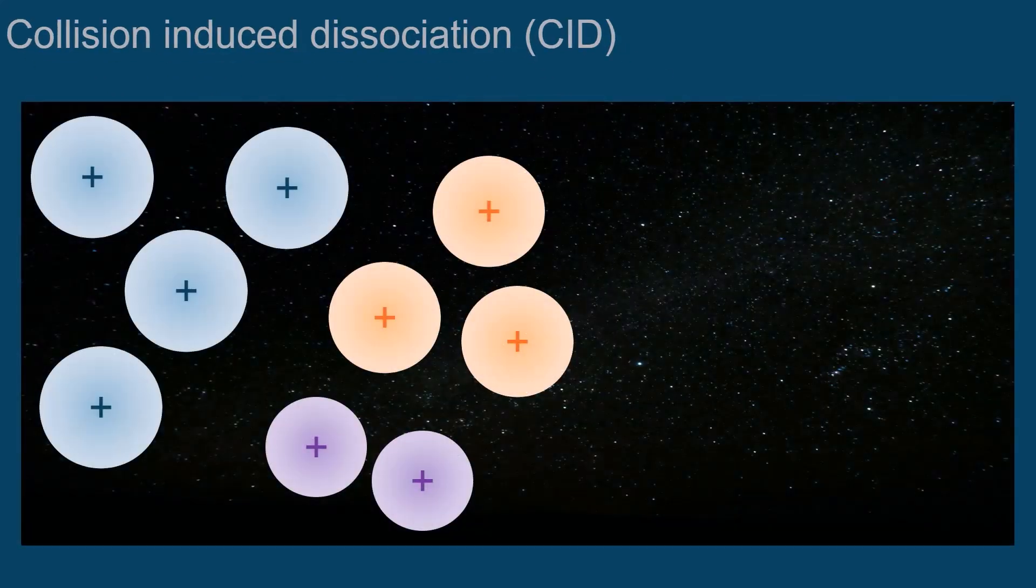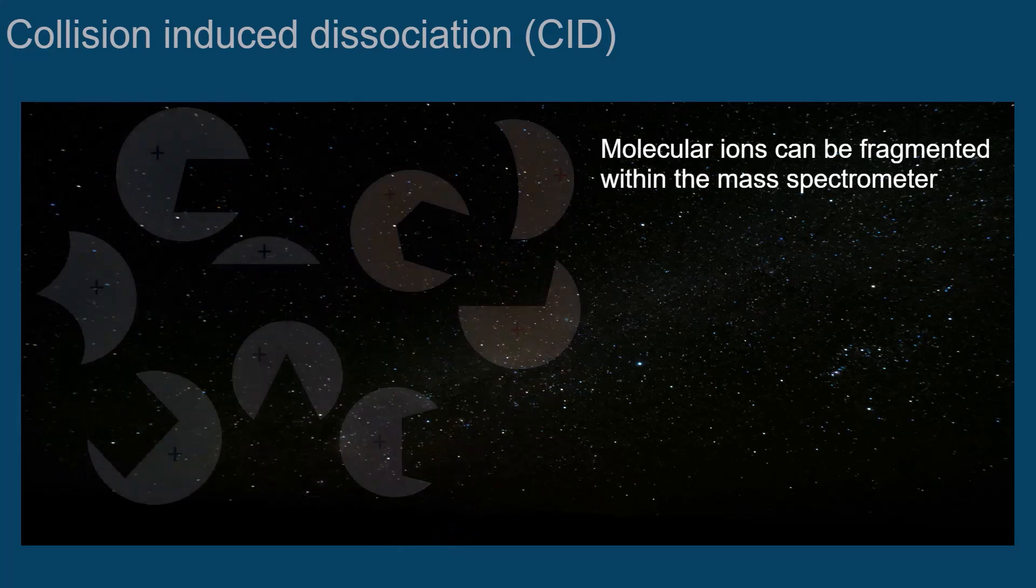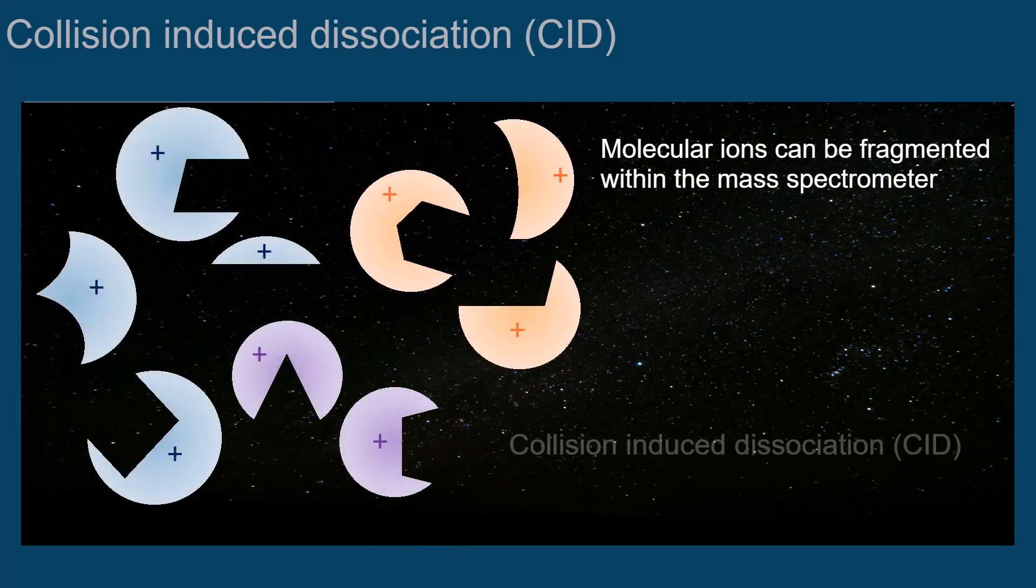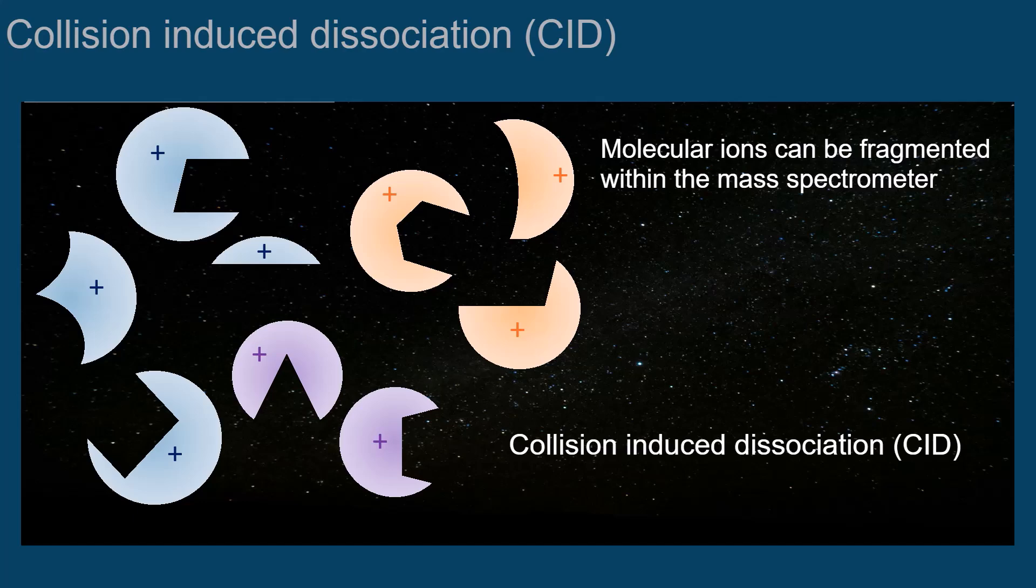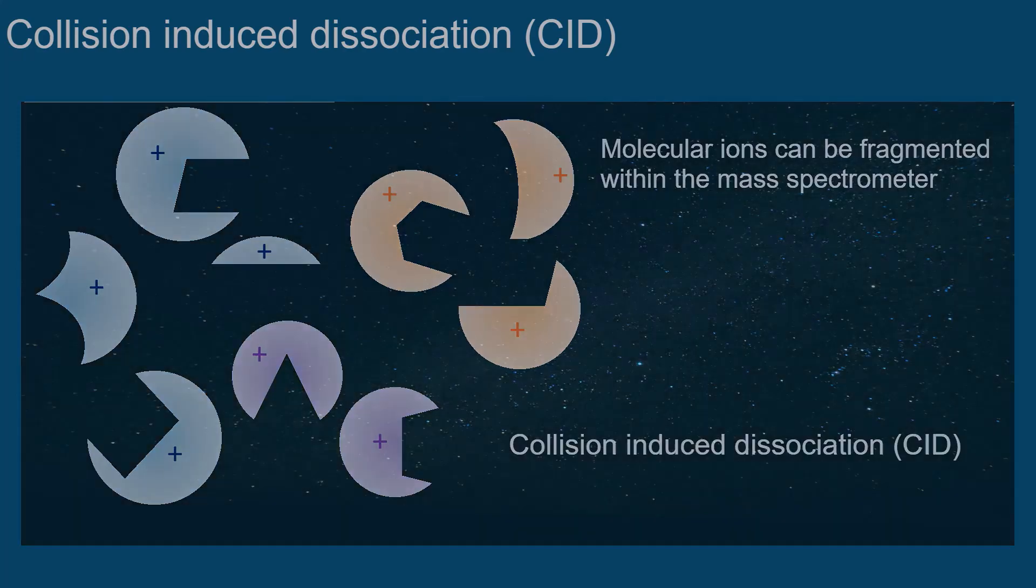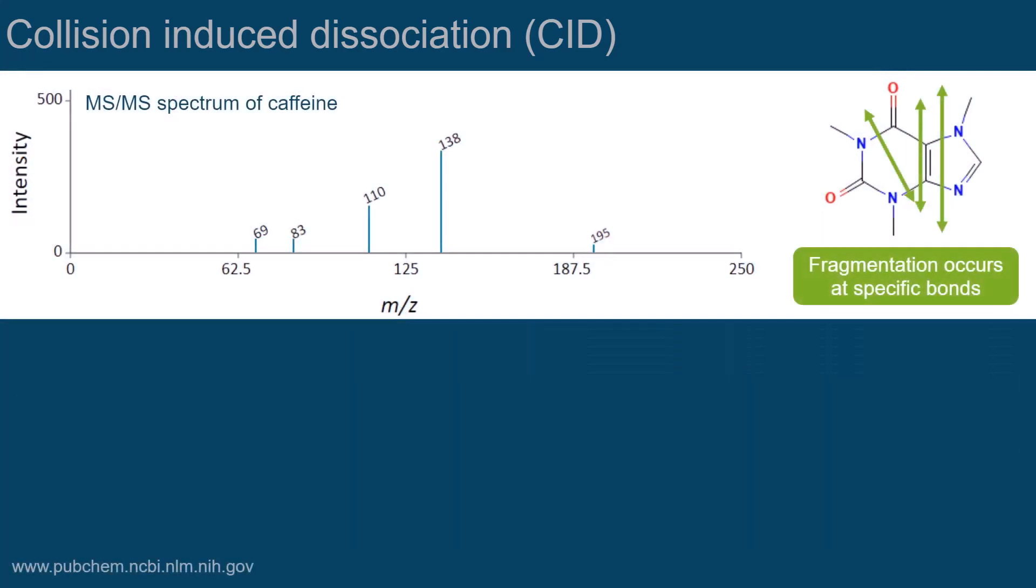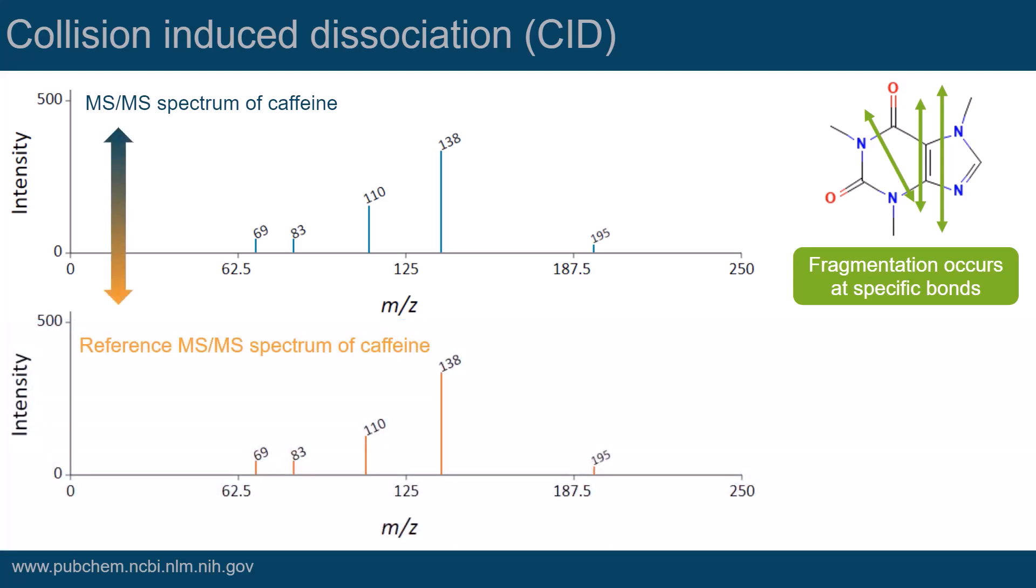Although most molecular ions are stable in the gas phase, you can make them fragment within the mass spectrometer, a process called collision-induced dissociation, or CID. Fragmentation occurs at specific bonds within a molecule, and the resulting fragments are a characteristic feature of this compound. So by analyzing the fragments of a specific molecular ion, we can conclude which molecule was in the sample.